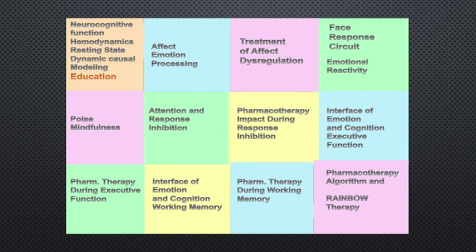Let's start with the neurocognitive function — hemodynamics, resting state, dynamic causal modeling, and education. These are different ways of looking at pathophysiology of brain function in affect-dysregulated children who have bipolar disorder.